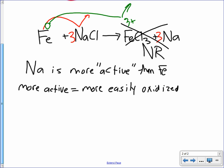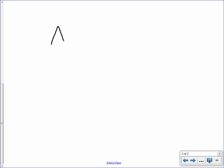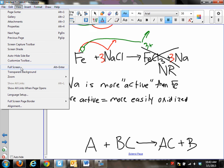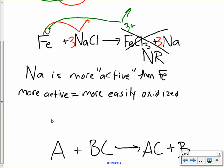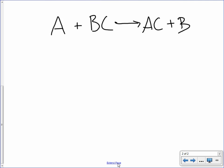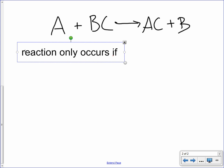So, the general rule for these single replacement reactions, your format is A plus BZ, each of those letters representing an element, will form AC plus B. And we can say that the reaction only occurs if A is more active than B.